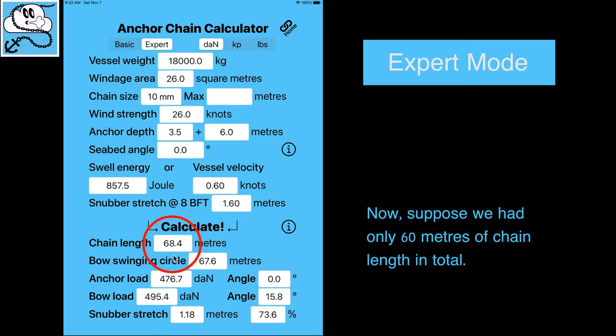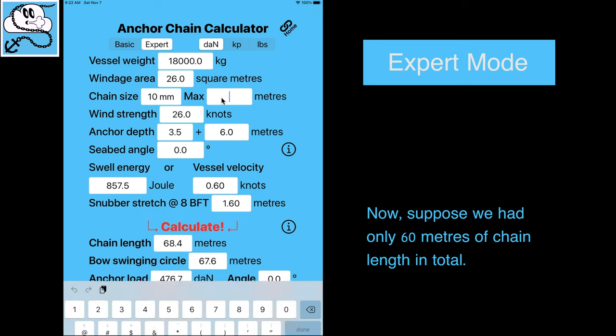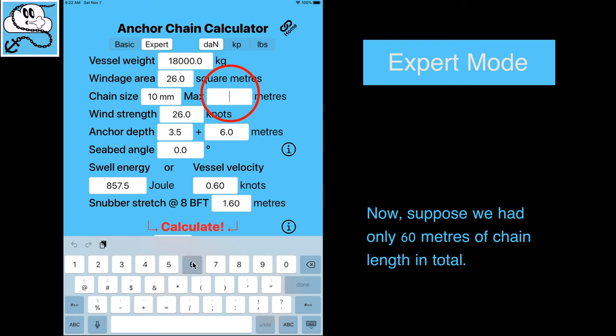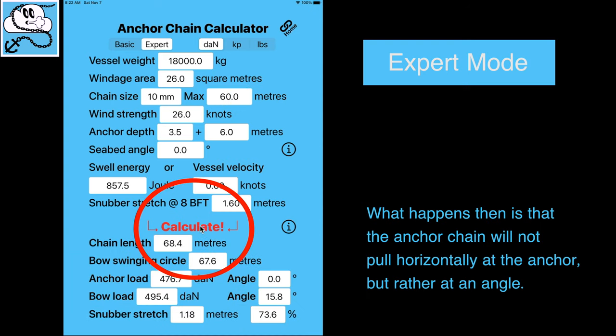Now suppose we had only 60 meters of chain length in total. What happens then is that the anchor chain will not pull horizontally at the anchor, but rather at an angle.